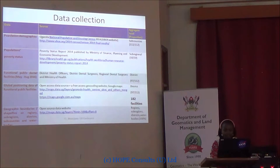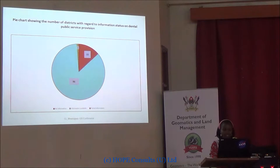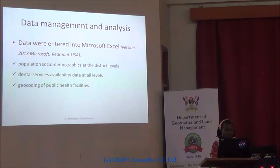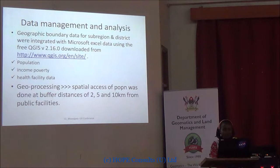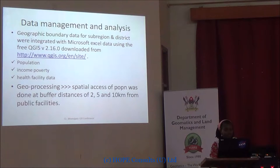Geographic boundaries were used from open source data. We applied QGIS, which is open source, and used population data, poverty and capacity data. Through geoprocessing, we were able to analyze the spatial access of the population. We chose buffer distances of 2, 5, and 10 kilometers from the public facilities that were identified.